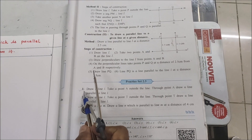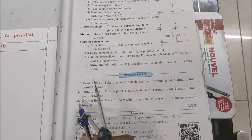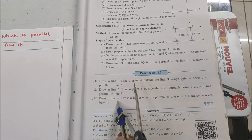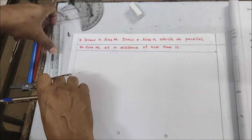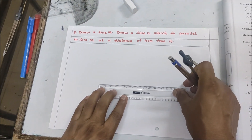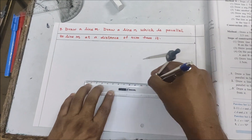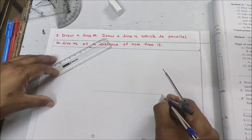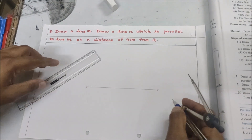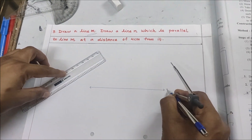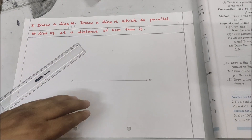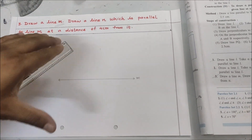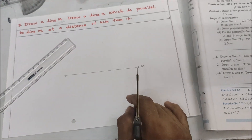Question number two is the same as question number one, so we will move to question number three. Question three: draw a line m, then draw a line n which is parallel to m at a distance of four centimeters from it. First we will make a line with the help of a ruler and put arrows at both ends. This is line m, and now we need to make line n parallel to m with a distance of four centimeters.